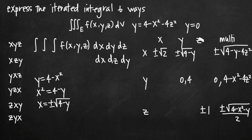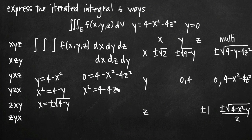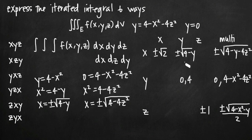For x in terms of z, I plug in 0 for y and get 0 = 4 - x² - 4z². Solving for x: x² = 4 - 4z², so x = ±√(4 - 4z²). I could factor out a 4 and take the square root, but I don't need to. So x in terms of z is ±√(4 - 4z²), and I've now got the whole row for x complete.